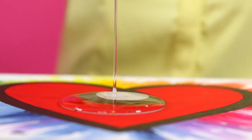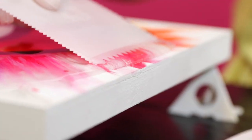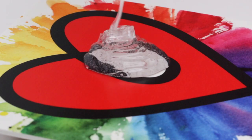Pour your resin out slowly and pour close to the surface. Pour in one-eighth of an inch layers. If you pour thicker than this, bubbles won't have a chance to escape or get torched out.